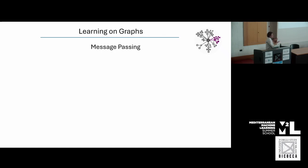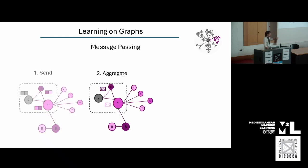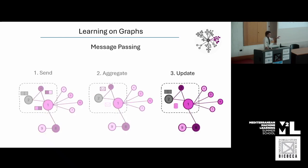The building block of graph neural networks is message passing — what happens at each layer of our GNN. Message passing consists of three steps: first, creating messages for each pair of connected nodes; second, aggregating these messages; and third, updating the embeddings — the representations of our nodes — according to the messages and aggregation coming from their neighbors.